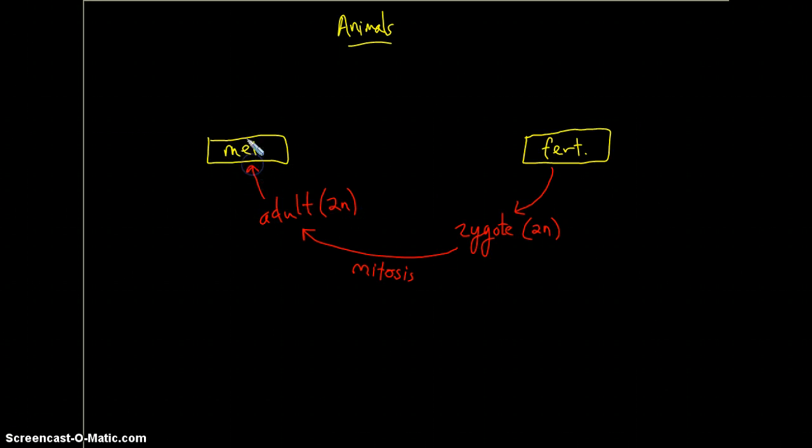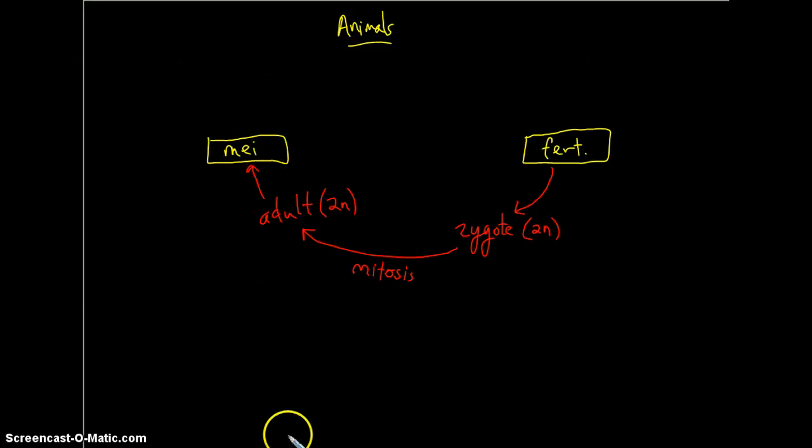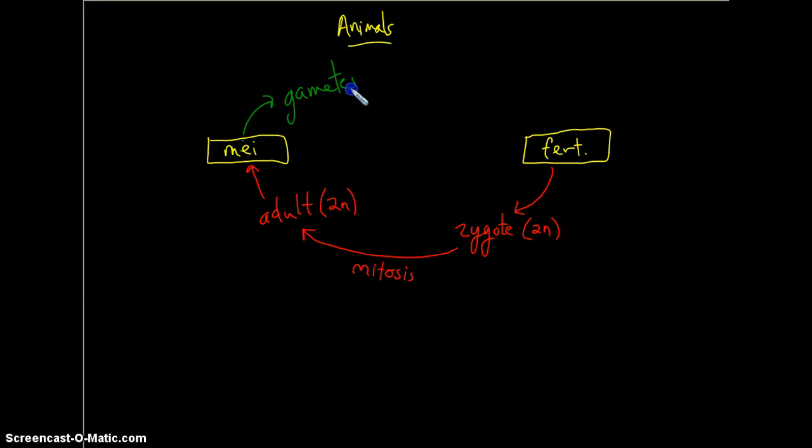Now, some of the cells, germ cells of that adult, will undergo meiosis, have their numbers reduced by half, and you end up creating gametes that are now 1N or have just one set of chromosomes. Then those gametes combine with the gametes of another organism, and you start the process all over again by creating a new diploid zygote.